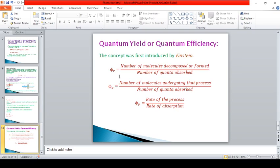Another important concept in photochemistry is quantum yield or quantum efficiency. It expresses the efficiency of a photochemical reaction and is generally represented by phi. Phi of a reaction is the number of molecules decomposed or formed divided by number of quanta absorbed, or phi of any process equals number of molecules undergoing that process divided by number of quanta absorbed, or phi process equals rate of the process divided by rate of absorption.